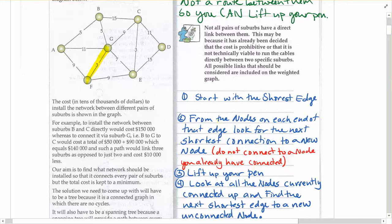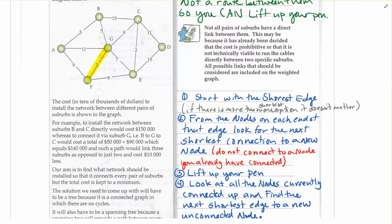From number 2, let me just add a note there about if there's more than one, it doesn't matter. So just adding that in there. If there's more than one shortest option, it doesn't matter which you pick. So here, 3 was the shortest. We've got two of them. I'm just going to pick one of them. Now I'm going to lift my pen up.